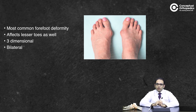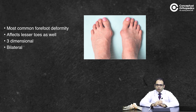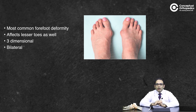Hallux valgus is not just the outward deviation of the big toe in comparison to the first metatarsal — it also involves the lesser toes as well. The deformity is not just in one plane; it involves all three dimensions. As per a study by McAuflin, the incidence of bilateral hallux valgus is in more than 80% of cases.